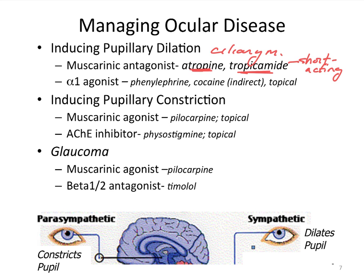Another way to cause pupillary dilation is by stimulating the radial muscle through the alpha-1 receptor, which can be done with phenylephrine. Cocaine given topically will also produce this effect.